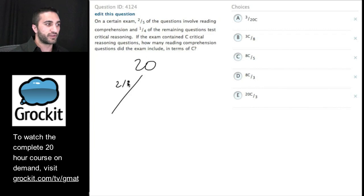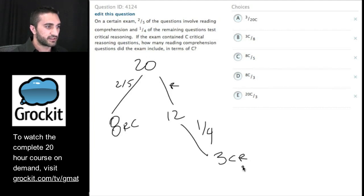So on a certain exam, two-fifths of the questions involve reading comprehension. Two-fifths of 20 should give us 8 reading comprehension, just keeping the information organized. And one-quarter of the remaining - this is why I like these little trees here because I can do the remaining really easily. The remaining must be 12 and they want a quarter of that, which should give me 3. One-quarter of the remaining questions on the test were critical reasoning.